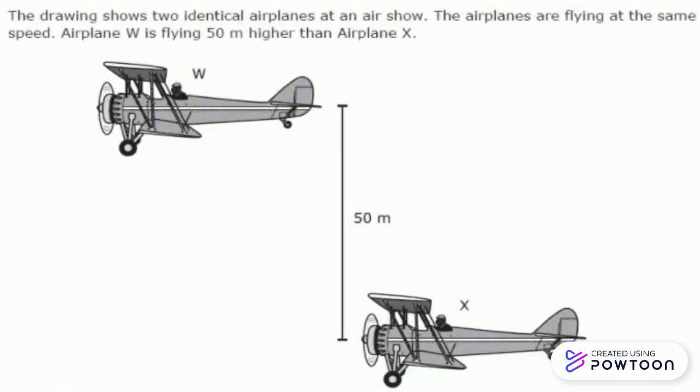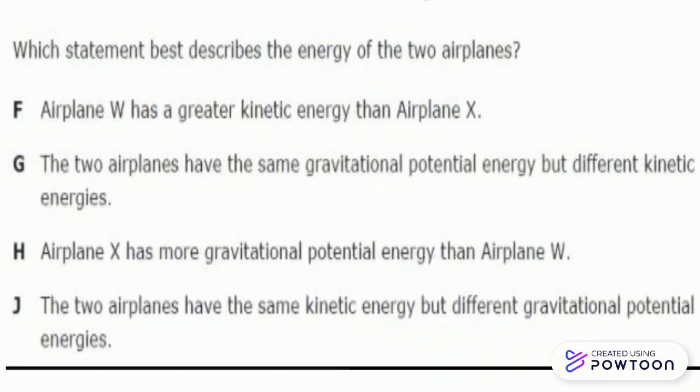Take a look at the drawing below. Notice that airplane W is 50 meters higher than airplane X. Which statement best describes the energy of the two airplanes? If you chose answer J — the two airplanes have the same kinetic energy but different gravitational potential energies — that is correct.